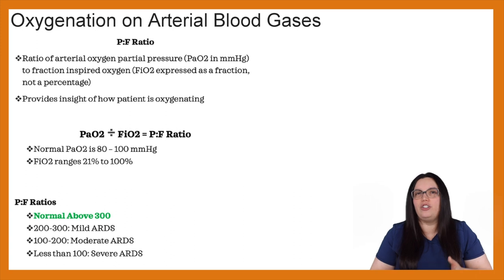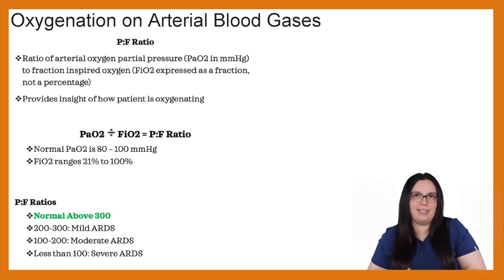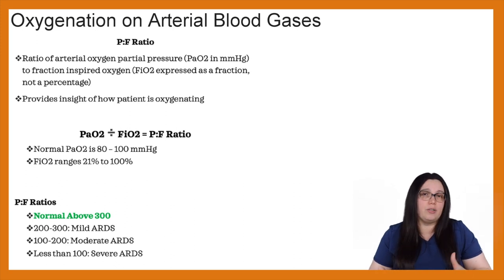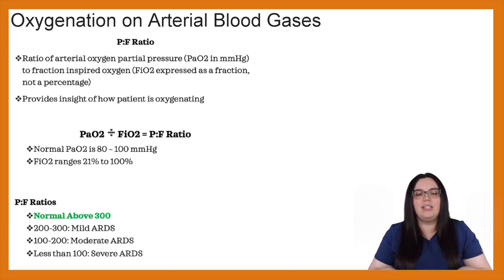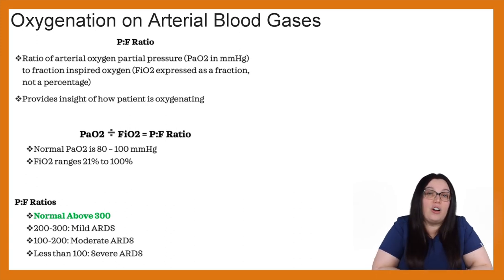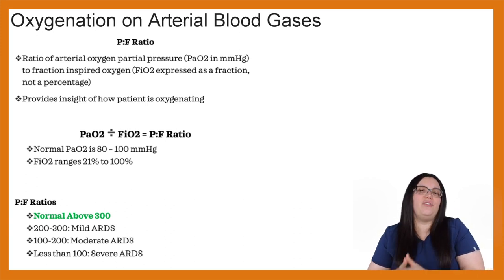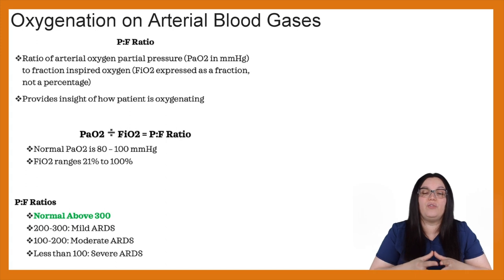Once we fall in the 200 to 300 range, we start to experience mild acute respiratory distress syndrome — we're starting to have impaired exchange when it comes to oxygenation. Once we get into the 100 to 200 range, we start to see moderate ARDS. This is usually where we're looking at mechanically ventilating patients, though we can even mechanically ventilate in mild ARDS depending on other factors. And if we have a value of less than 100, that is severe acute respiratory distress syndrome.